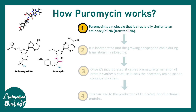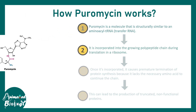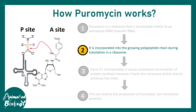First, puromycin has a structure which is very similar to aminoacyl tRNA, as you can see here. This particular structure can easily incorporate itself into the A site of the ribosome, and it can actually form a peptide bond with the existing peptide chain in the P site.